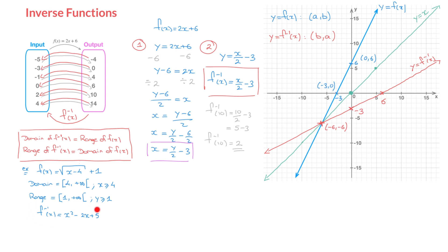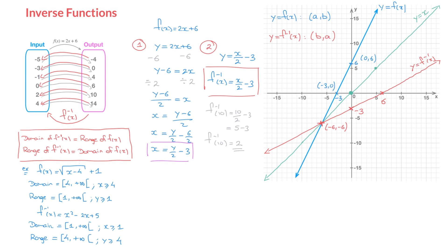I want to focus on this inverse function's domain and range. The rule allows us to state that its domain equals the range of f(x), so the domain is all real numbers from 1 included up to positive infinity. And its range equals the domain of f(x), so all real numbers from 4 included up to positive infinity. We can write this as domain: x ≥ 1, and range: y ≥ 4. Thanks to this rule, we can simply state the inverse function's domain and range without any further justification.